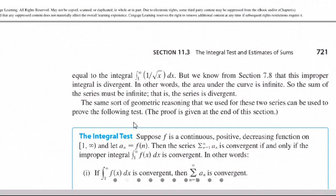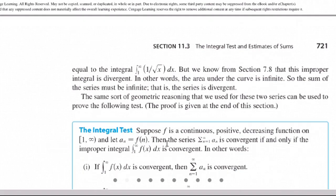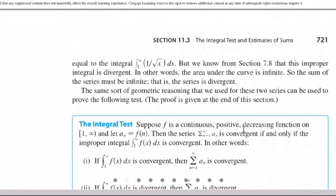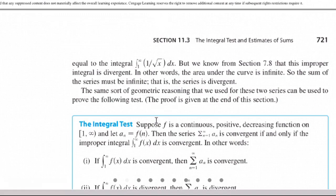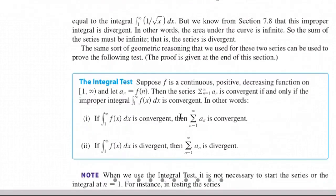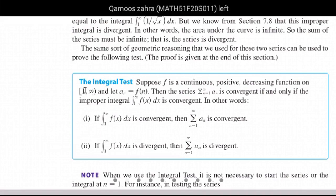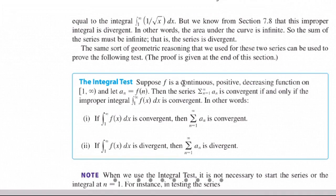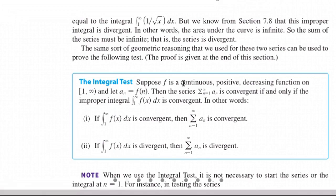Now, if we give these two results, we take the integral test. Simply stated: if the function f is continuous, positive, and decreasing on the interval [1, ∞), and a_n = f(n), then the series is convergent if and only if the improper integral from 1 to infinity is convergent. In other words, if the integral converges then the series converges; if the integral diverges then the series diverges.